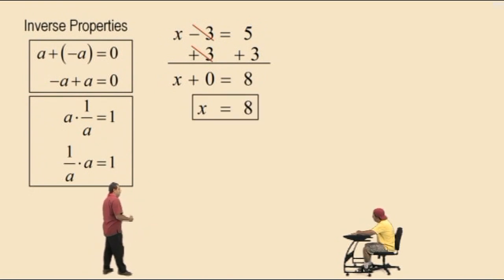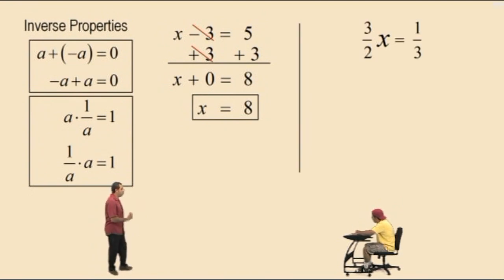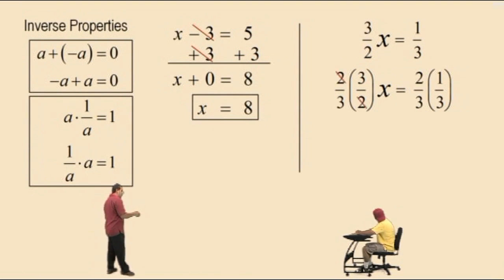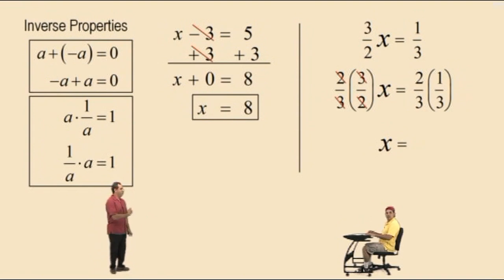The inverse property for multiplication states that multiplying reciprocals gives 1. For example: 3 halves x equals 1 third. Multiply both sides by the reciprocal of 3 halves, which is 2 thirds. The 2s cancel and the 3s cancel, leaving 1x. We write 1x simply as x. On the right-hand side, we get 2 ninths.